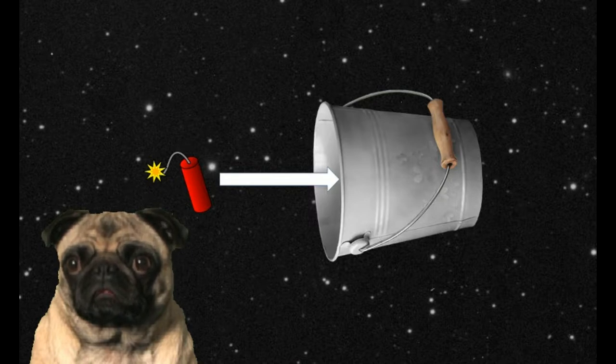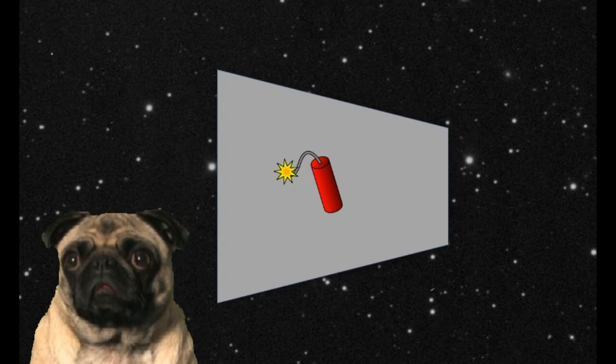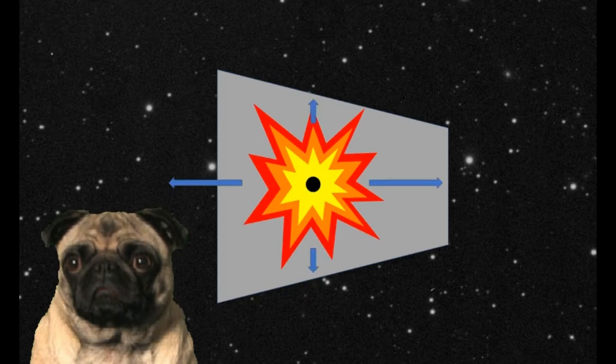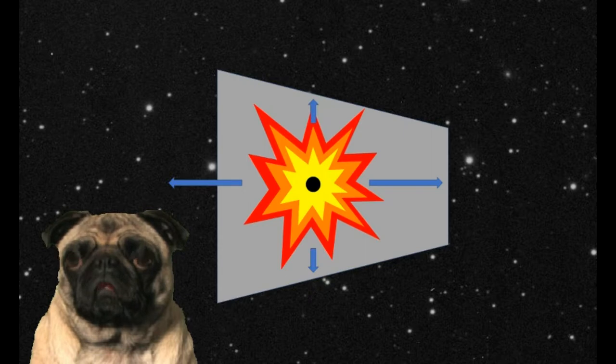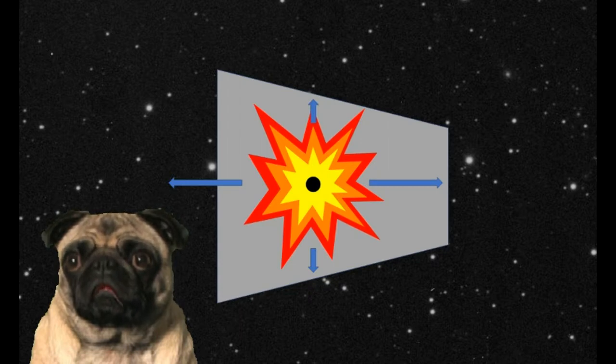What would happen if we move the dynamite inside the bucket? Let's assume that this is a very strong bucket that will not be blown to pieces when the explosion occurs. Let's look at the blue arrow pointing to the right. This arrow represents the hot gases thrown off from the explosion that will impact the closed bottom of the bucket. The blue arrow pointing to the left represents hot gases from the explosion that impact nothing, leaving the bucket via the open top.